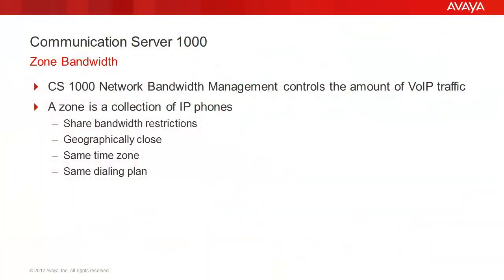The CS1000 supports network bandwidth management on a network-wide basis so that voice quality can be managed between multiple call servers. Bandwidth management provides a means of controlling the amount of voice over IP traffic that exists in an IP network. Call servers in the network keep track of various amounts of voice over IP traffic and provide treatment to voice over IP calls.